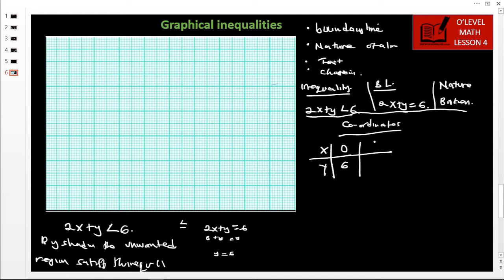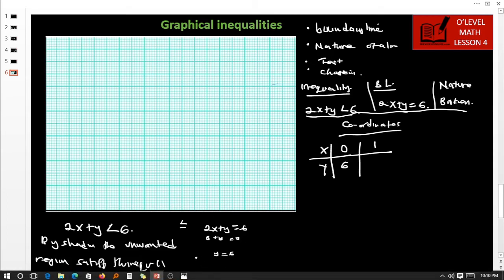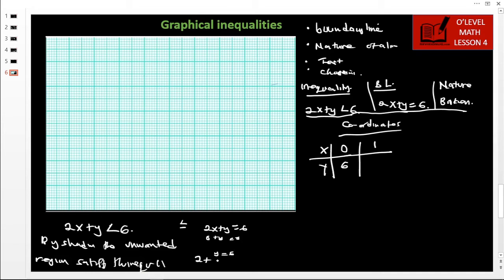And again if x was 1, what would be the value of y? It is now 2 times 1, that is 2, plus y equals 6. So y equals 4. These are our coordinates.